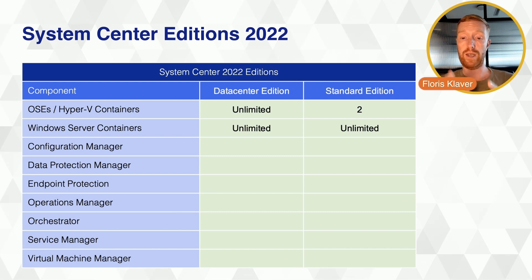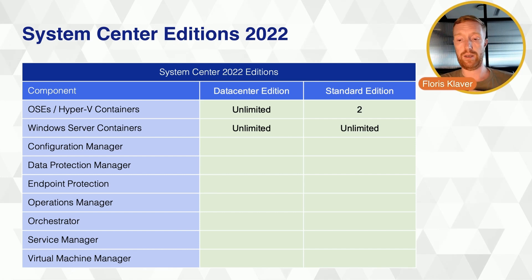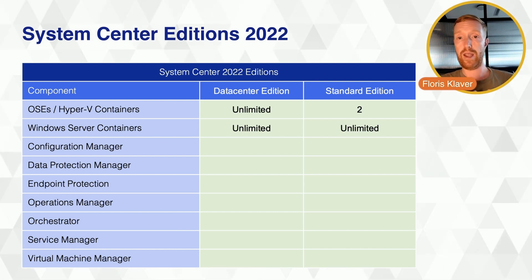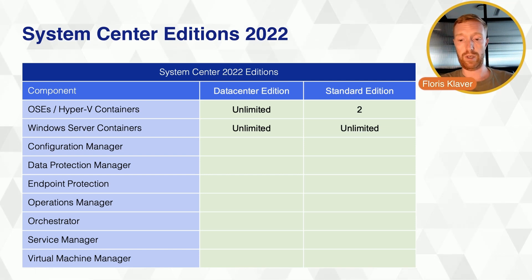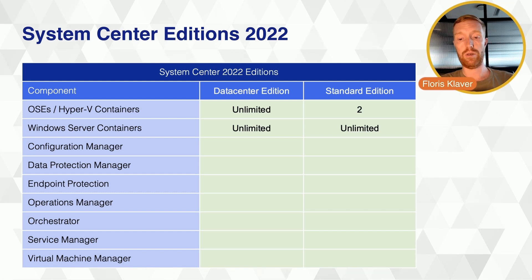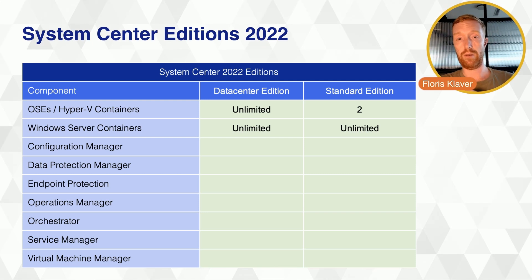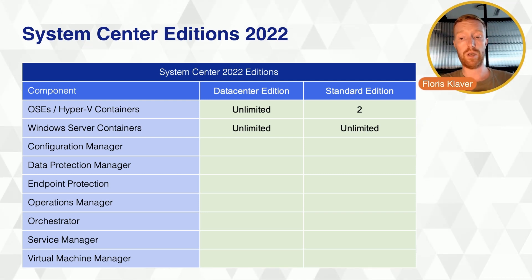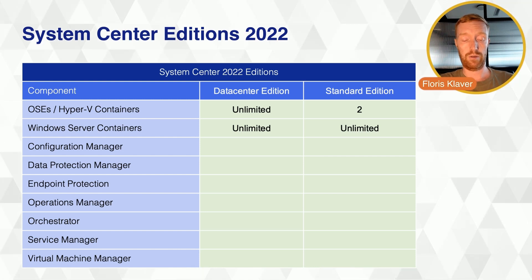System Center has the same two editions as Windows Server: System Center Standard and System Center Datacenter. If you buy either of these two editions, you get all the System Center components included, you can manage any workloads, you have rights to the management server software, rights to the SQL technology required, and you need Software Assurance on top of this.